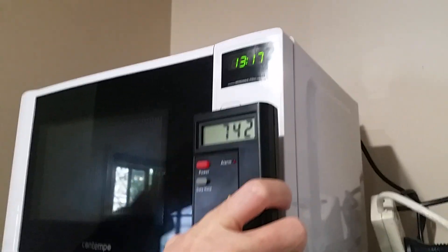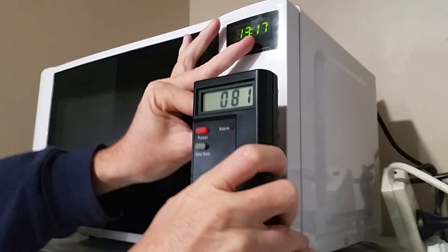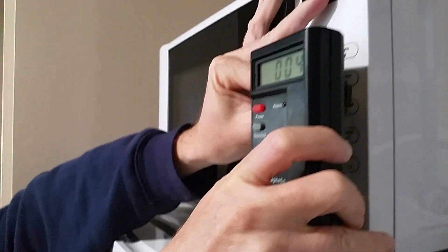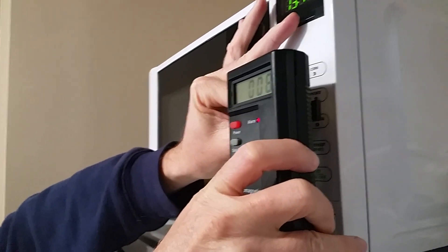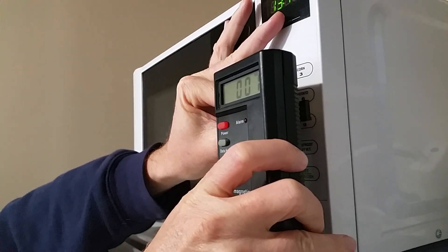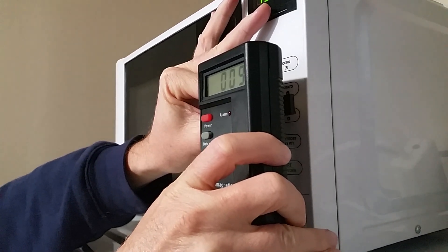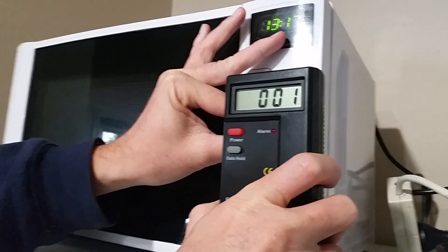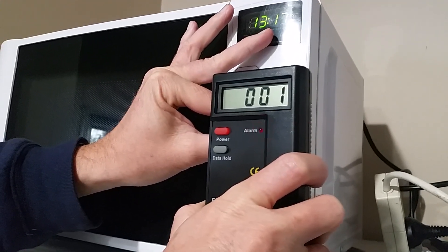Now we put the shungite in between, and what happens? We take our reading down to next to nothing. As you can see, the shungite is between the sensor and the microwave, so it's sensing what's coming out, and it's taken the reading down to basically nothing. That's just how effective shungite is.